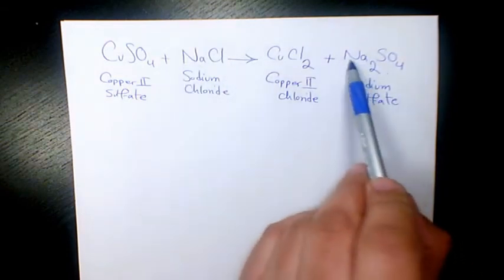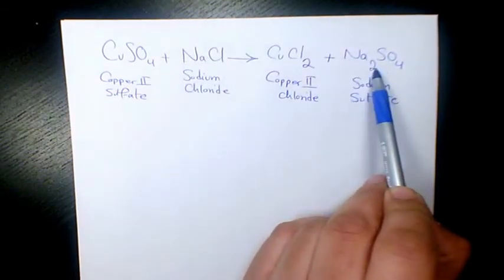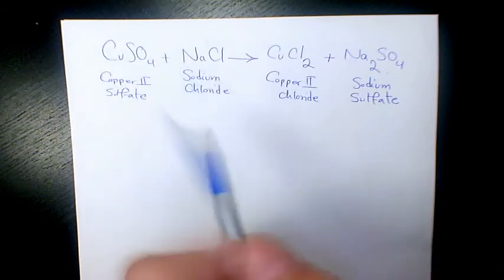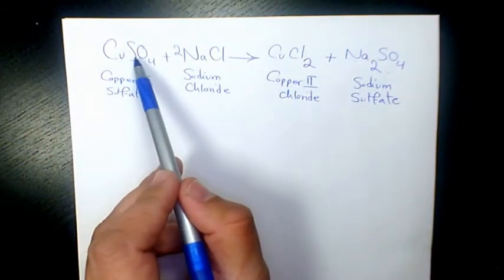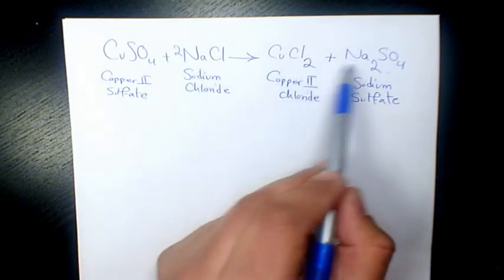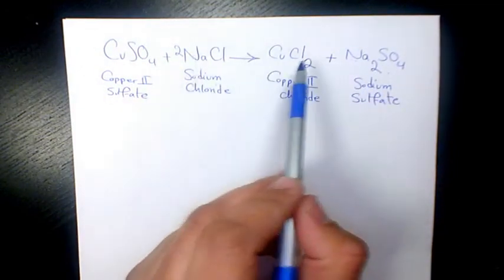So we need 2 NaCl. For SO4, we have one on each side, so that's balanced. Cu is also balanced, so the reaction is balanced.